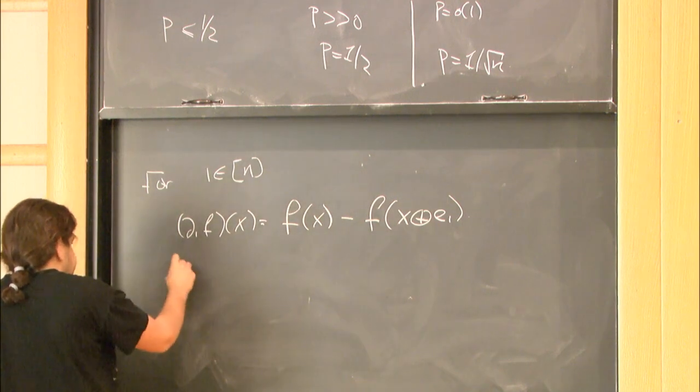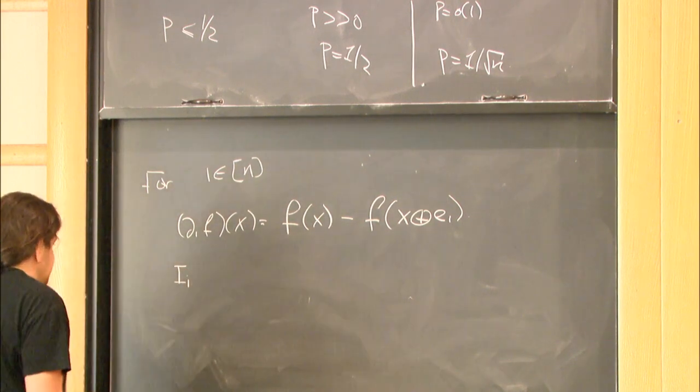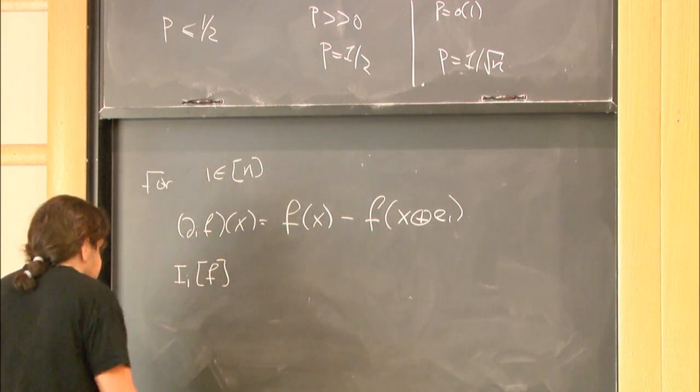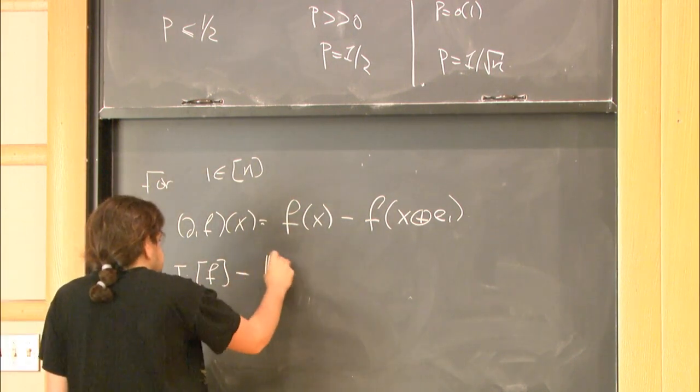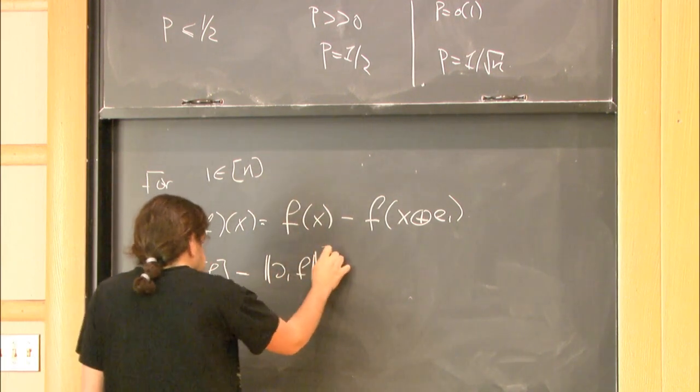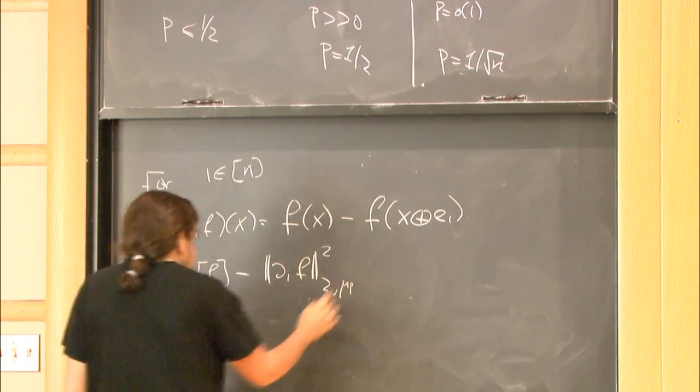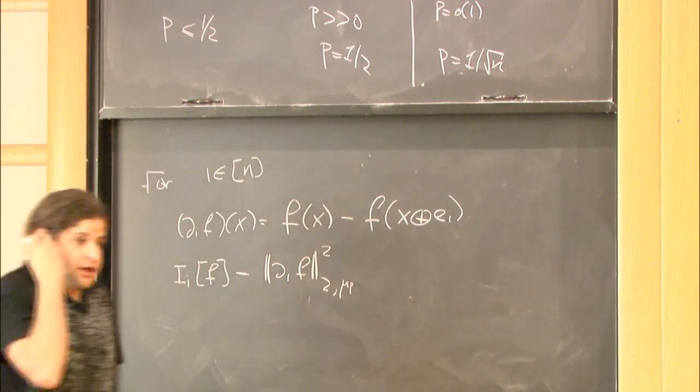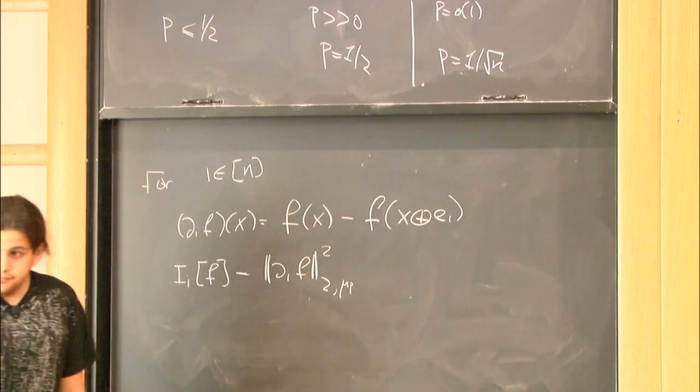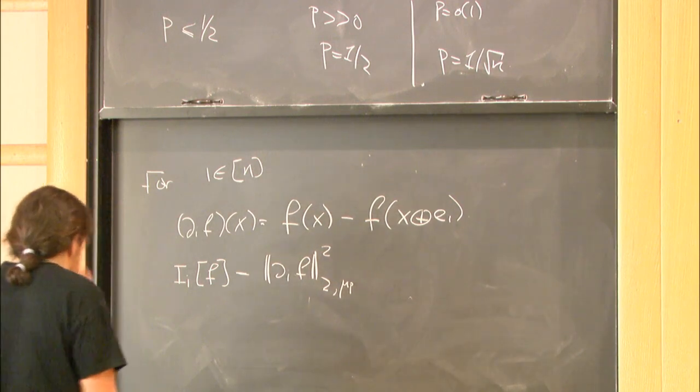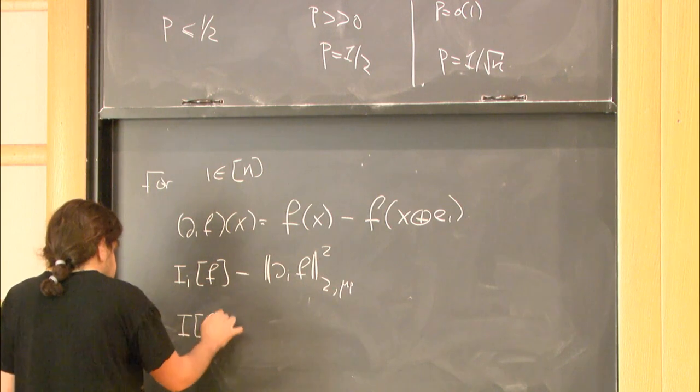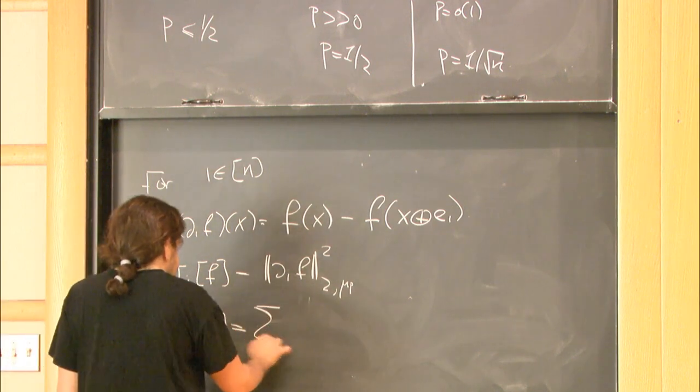And then, the effect of coordinate i on the function, we define it to be the influence of coordinate i, is the two-norm of the derivative, and it will be convenient for us to take it squared. And here, all norms have respect to the measure that we have, to the mu-p measure. And the last thing I want to define is the total influence of the function, which is simply the sum of all influences.